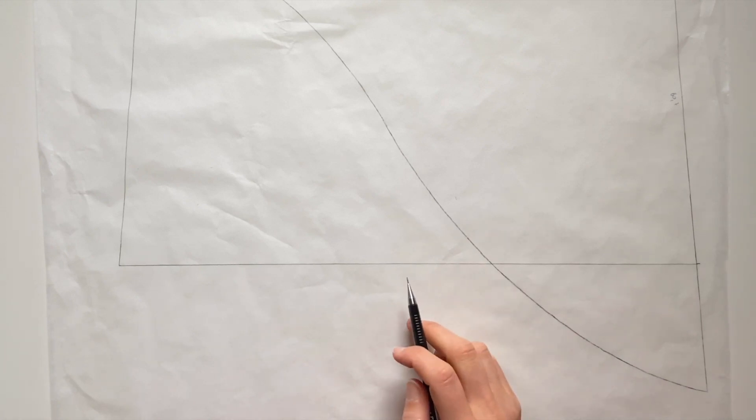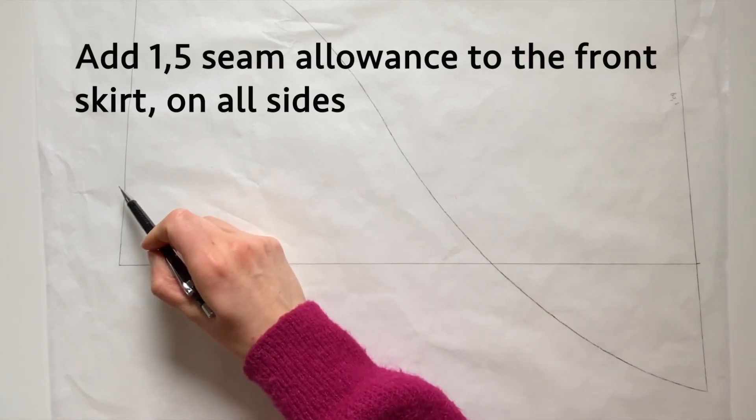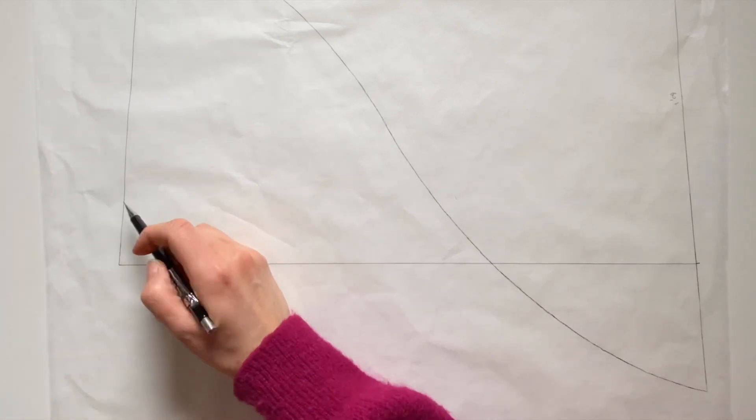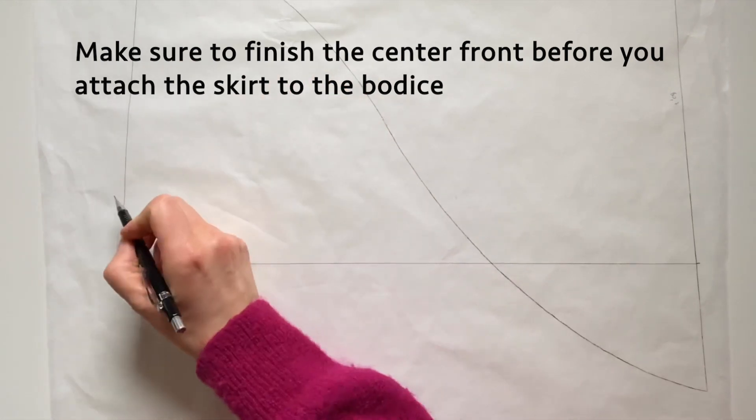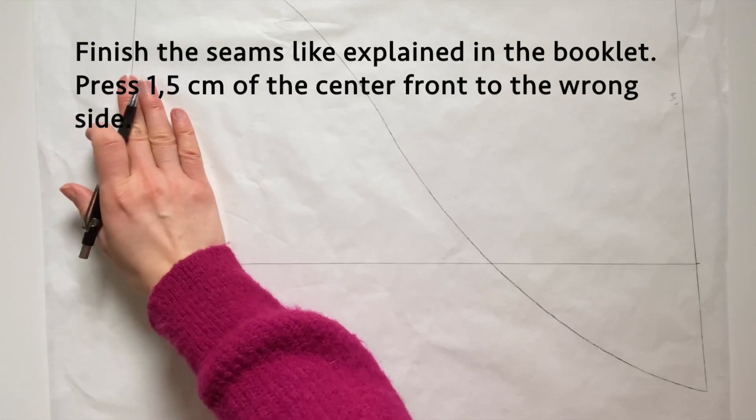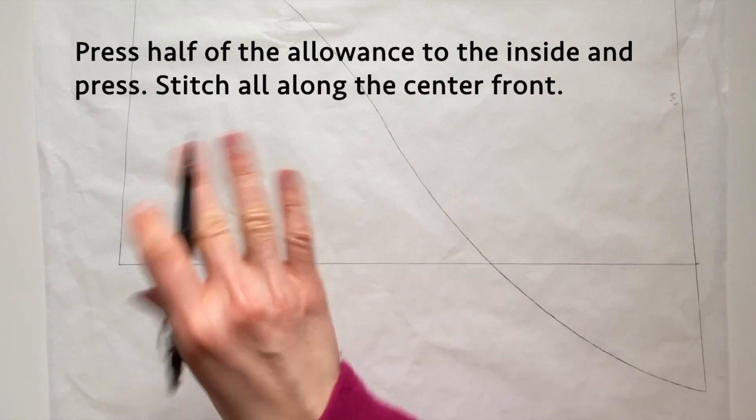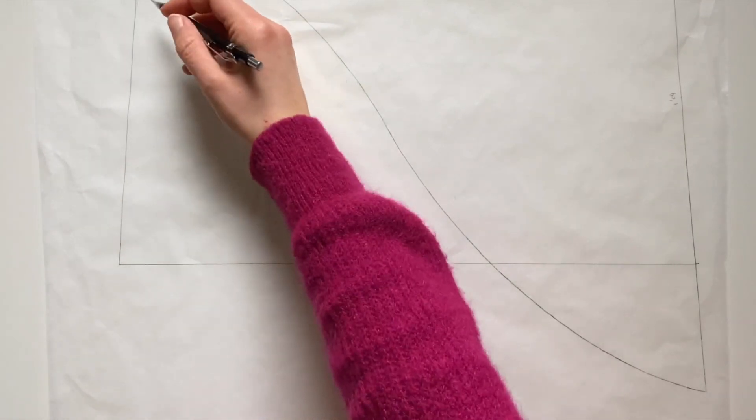So after you've drawn the model to the straight skirt version, you can add again a 1.5 centimeter seam allowance to the hem and to the center front. The way to stitch is the same as in the booklet. So before you attach the skirt pieces to the bodice, you iron 1.5 centimeters of the center front towards the wrong side.